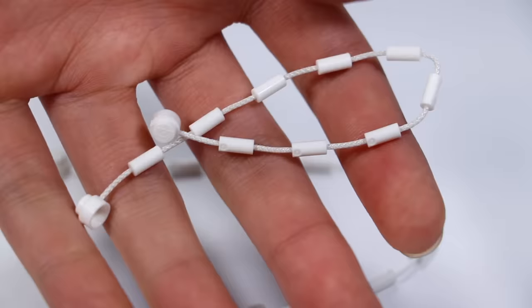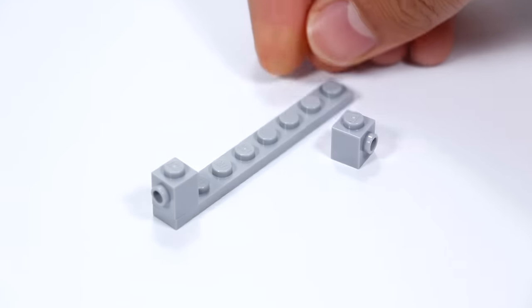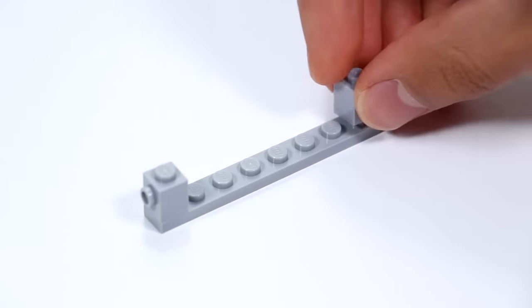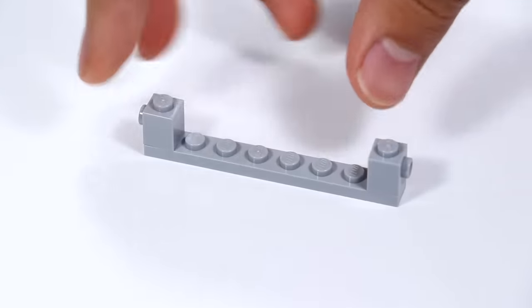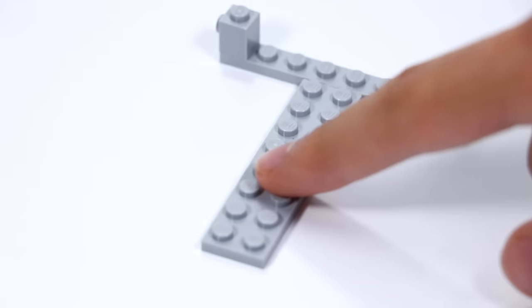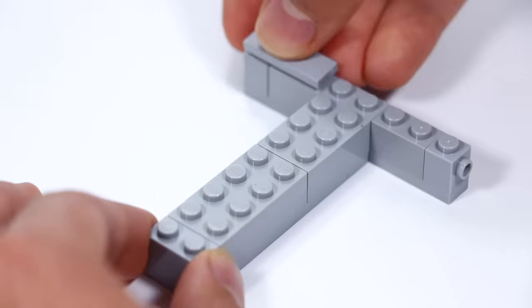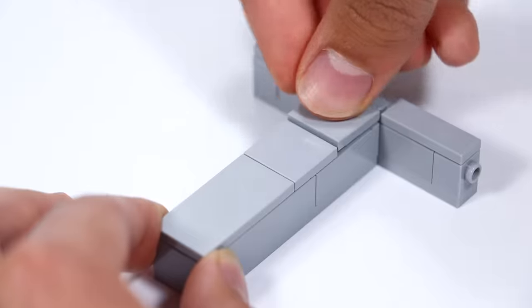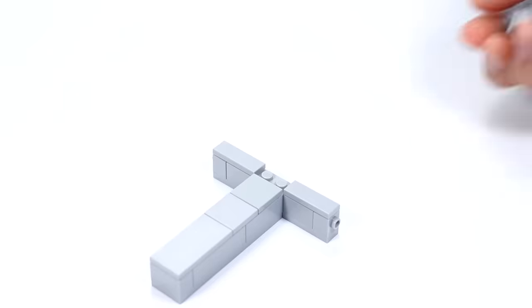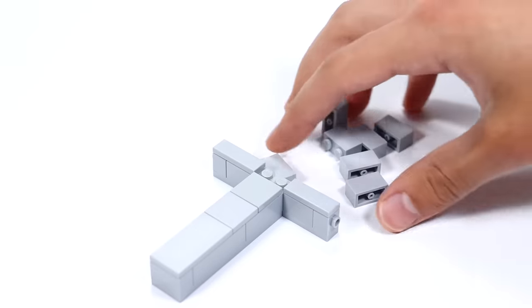Starting off, usually I create like a wide base, usually eight studs in width, and I put two SNOT bricks on both ends. To assure that this build doesn't fall over, you want to extend this base a little bit. So as you can see right here, we have our base layer.